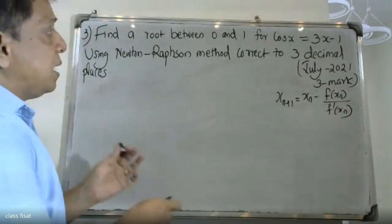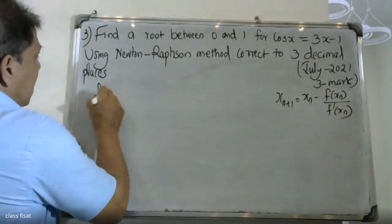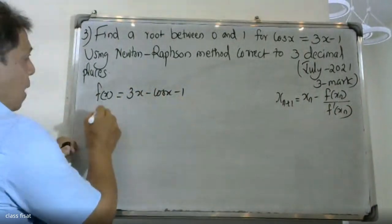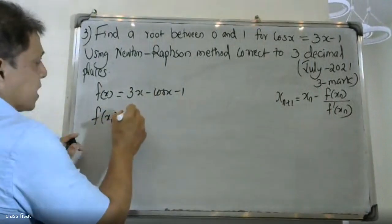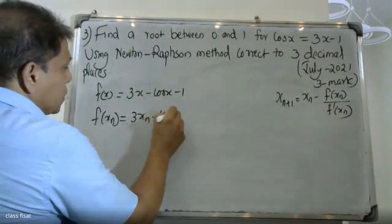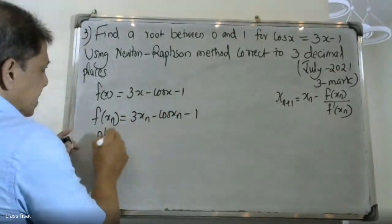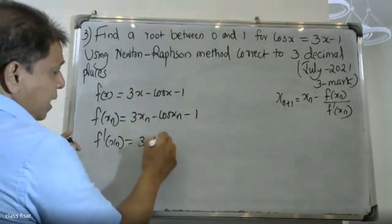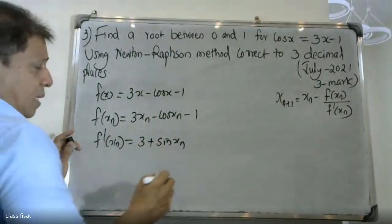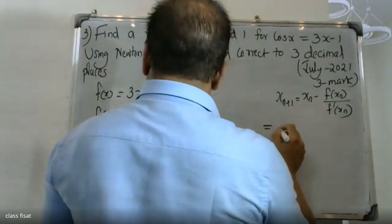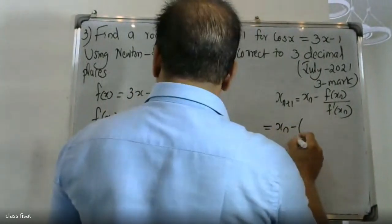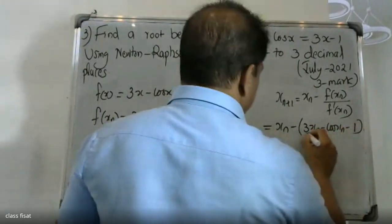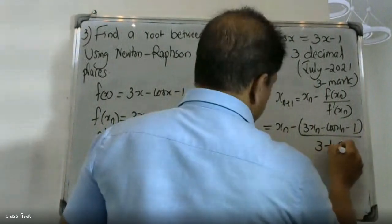Here, f of x_n is equal to 3x minus cos x minus 1. And f dash x_n is equal to 3 plus sin x.